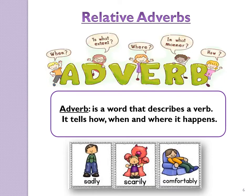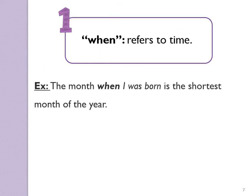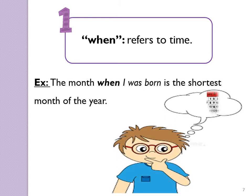A relative adverb is a word which describes or adds information about an action and tells how, when, or where the action takes place. When refers to time. For example: The month when I was born is the shortest month of the year — I know this month by it being the shortest month of the year.